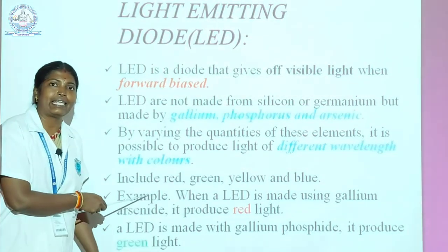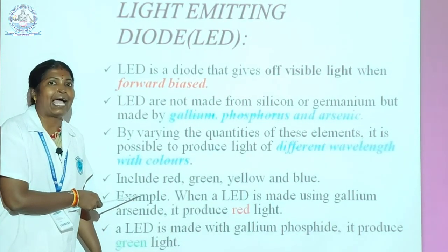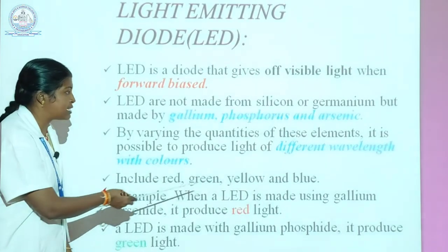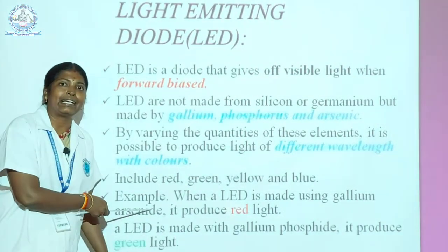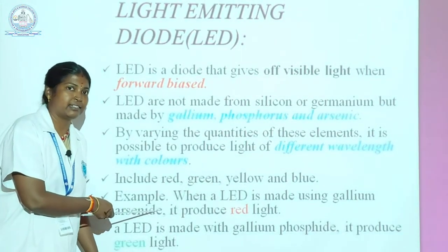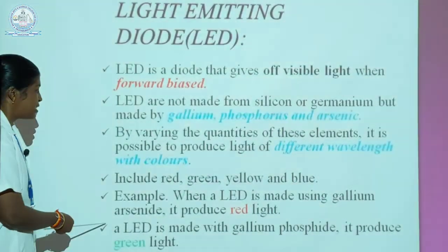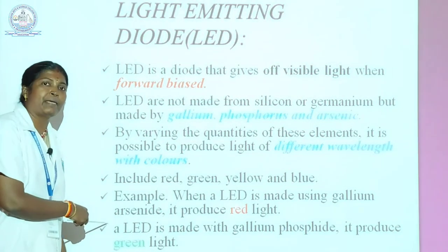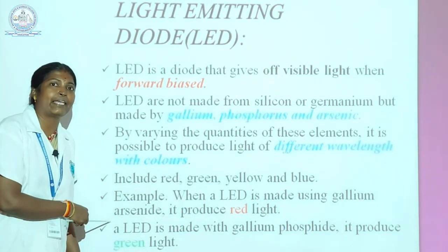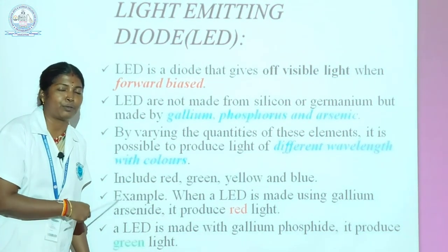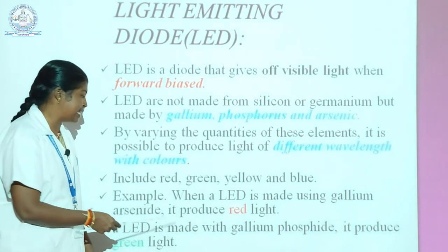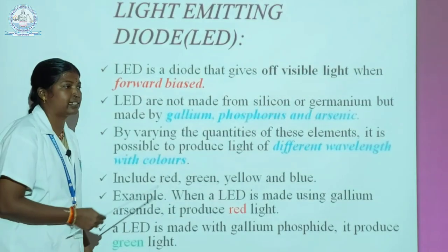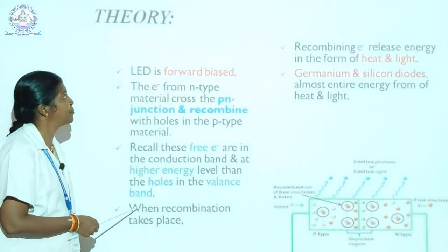For example, when an LED is made using gallium arsenide, it produces red color light. Next, an LED made with gallium phosphate produces a lattice green color light.